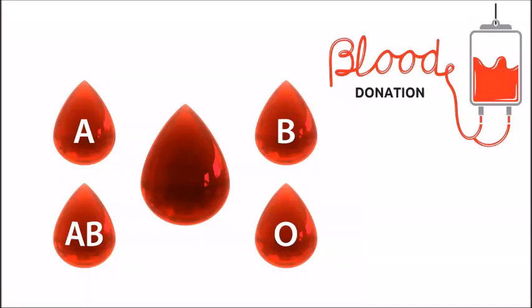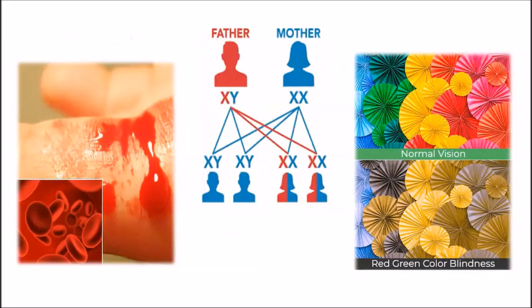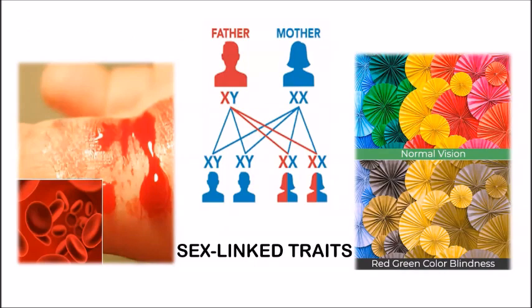In this video I'm going to look at the inheritance of ABO blood groups and show you the importance of compatibility in blood donations. I'm also going to focus on the inheritance of sex-linked traits such as haemophilia and red-green colorblindness. So if you need help in this area keep watching.